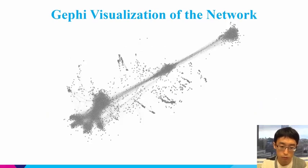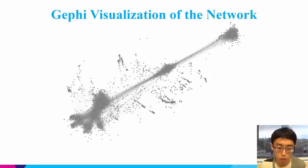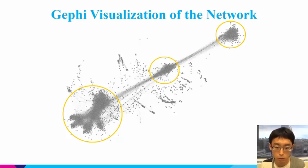This is the Gephi visualization of the network. After inputting the binary matrix into Gephi, I applied a network visualization algorithm to generate this figure. After such network visualization, you can already discern some clusters by eye — at least three big clusters. But by eye it's still subjective; we need to apply some clustering algorithms to give more objective results.